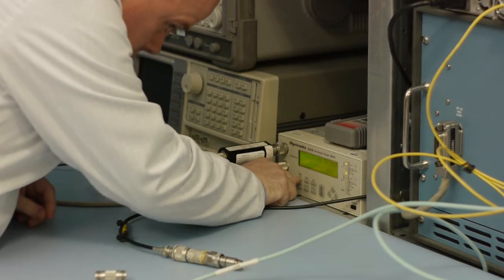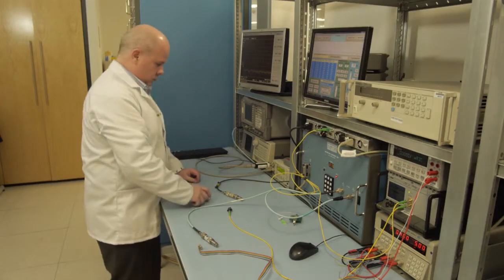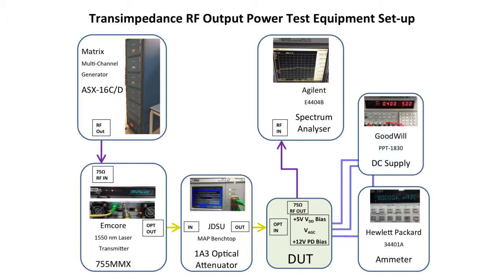The NTSC analog video carriers are generated using a multi-channel generator that connects to a 1550nm laser transmitter. The optical output power from this transmitter is then connected to an optical attenuator which controls the optical power level that is applied to the DUT. The ammeter is used to measure the photodiode's current and the output of the DUT is connected directly to the spectrum analyzer.